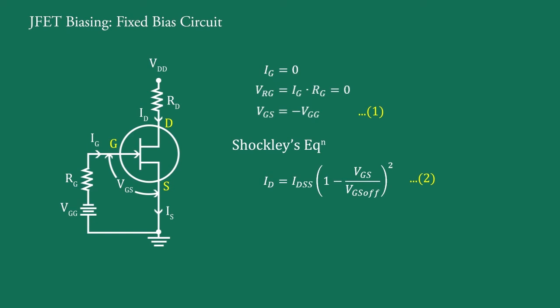Therefore, using this equation, we get current ID. Now, applying Kirchhoff's voltage law at output section, we get VDD equal to IDRD plus VDS and therefore VDS equal to VDD minus IDRD.